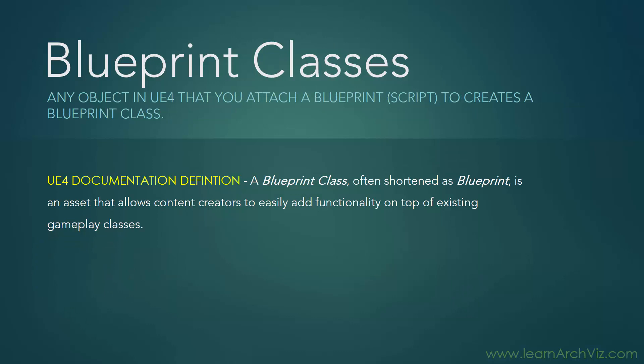First, blueprint classes. Any object in UE4 that you attach a blueprint or script to creates a blueprint class. In the UE4 documentation, the definition is this: a blueprint class, often shortened as blueprint, is an asset that allows content creators to easily add functionality on top of existing gameplay classes. We've taken a basic actor in our scene — a static mesh, a light, whatever it is — and hit the add blueprint button to add functionality to it. That is actually creating a blueprint class.